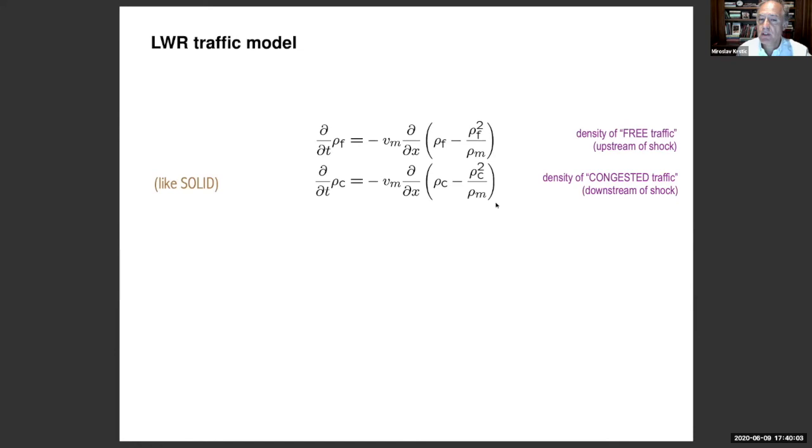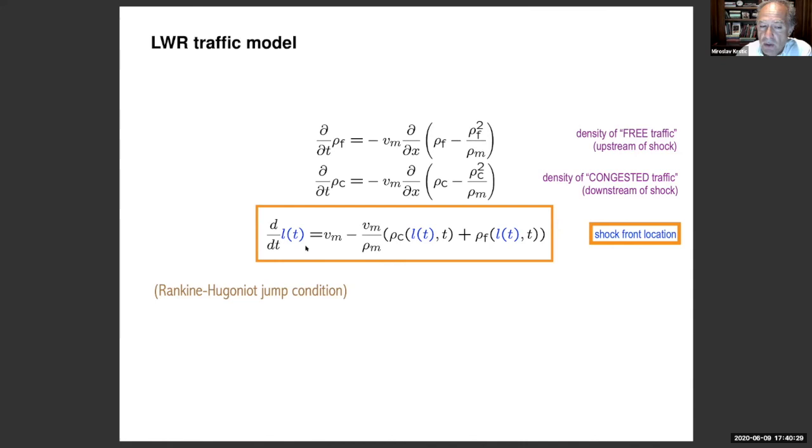So two identical first-order hyperbolic PDEs, but with different directions of transport. We can think of the free traffic as being a liquid and the congested traffic being denser, being the solid here. Finally, there is an ODE. This ODE models the position of the shock. It's often called the Rankine-Hugoniot jump condition. And you see that it is quite similar to the ODE modeling the liquid-solid interface in the Stefan problem with only one difference: that there are no derivatives with respect to X in here. So it's not flux that drives the position of the shock, but it is the densities that drive it from both the left and the right, from both the congestive and the free side.